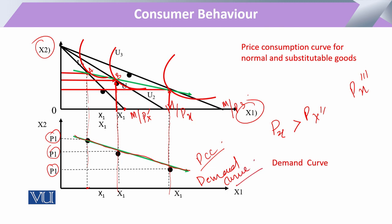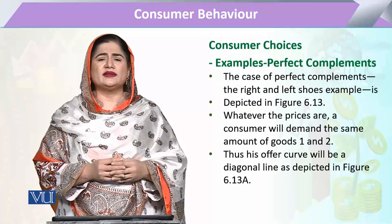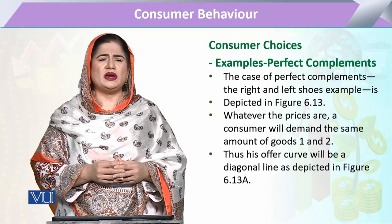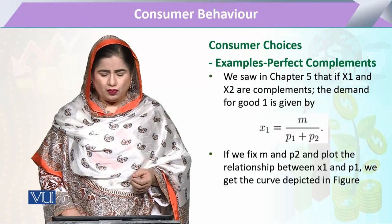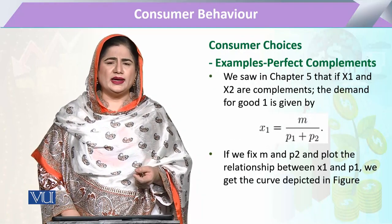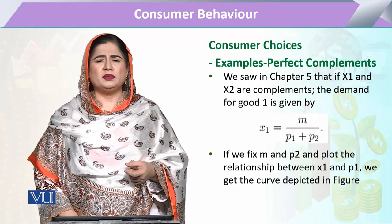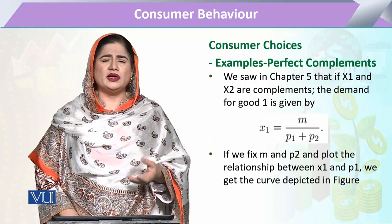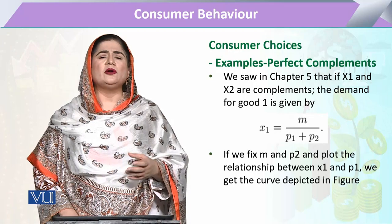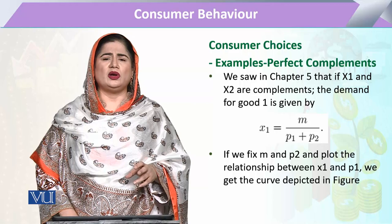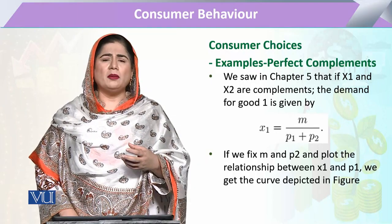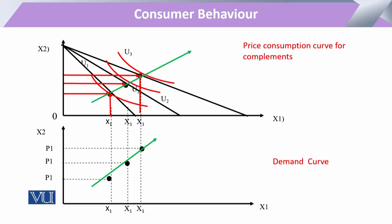The price consumption curve provides the solution to draw the demand curve. Taking the example of perfect complements — perfect complements are utilized in a fixed combination. When the price of one commodity changes, it will have no effect on the quantity demanded because the consumer can only change demand if able to purchase that fixed proportion bundle of both goods.